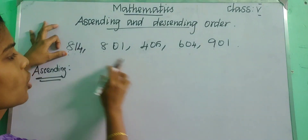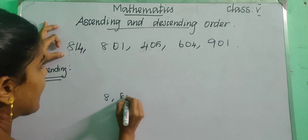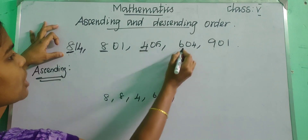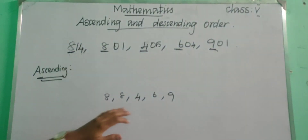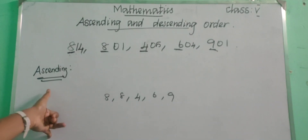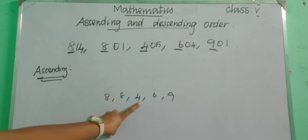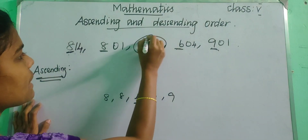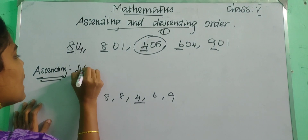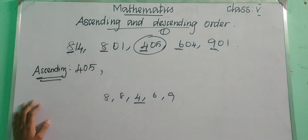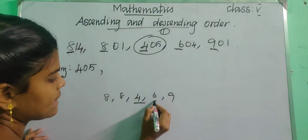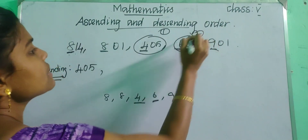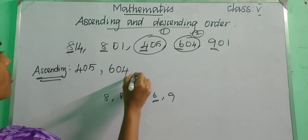Comparing all these numbers in the 100s place: 8, 8, 4, 6 and 9. Ascending means small to big, so which one is the smallest? 4 is the smallest one. So we can write 405 as the first number in ascending order. The second smallest in the 100s place is 6, so 604 is the second number.